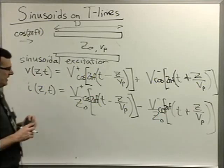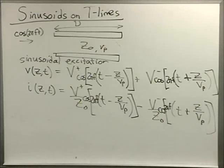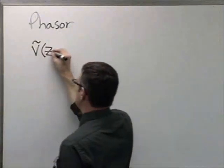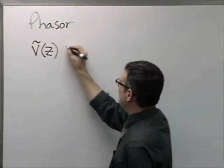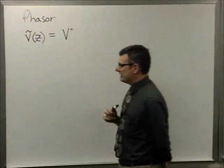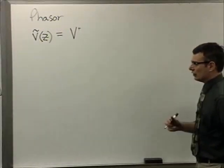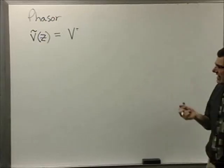Now, I'm going to take this into the phasor domain. Let me write this over on this board. And that's nice because it eliminates my time dependence and just gives me a complex value to track amplitude and phase. So my phasor voltage is only a function of z. It's v with a squiggle on it. And that's going to be equal to v plus.